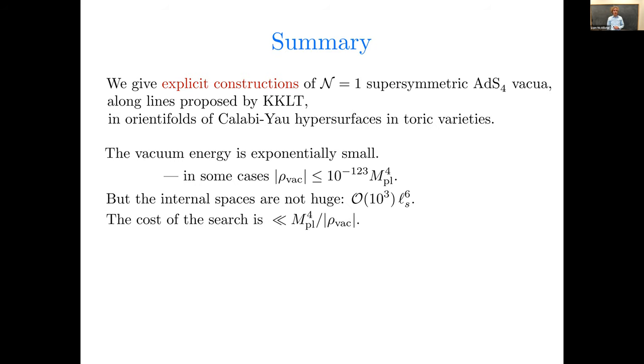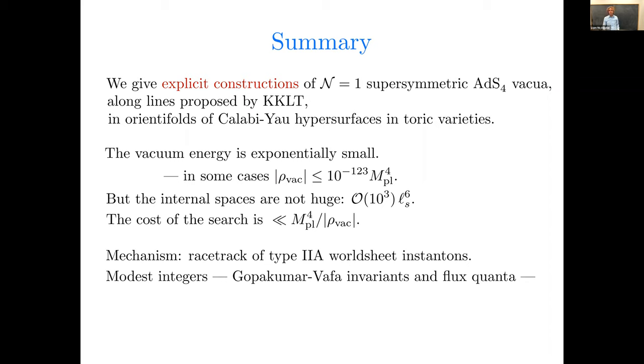Another important point that I'd like to advertise at the beginning is that the cost of the search is much, much less than one over the magnitude of the vacuum energy. Naively, small vacuum energy takes an expensive search, and that's not the case here. The mechanism underlying this result is a racetrack of type 2a worldsheet instantons, although we'll be considering type 2b compactifications. And what happens is that modest integers, Gopakumar-Vafa invariants or flux quanta, end up getting exponentiated to give the vacuum energy. As an example, which will come up later, one finds GV invariants 2 and 252, and a number 58 arising from a particular choice of fluxes in a racetrack, and that gives 10 to the minus 122. So we'll see these numbers arising in a real example. Okay, but this is basically how it works. Some modest size numbers of order 100, 200 or so get you to an extremely small vacuum energy.